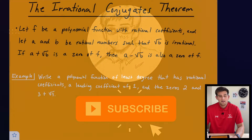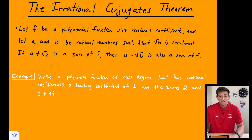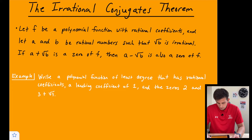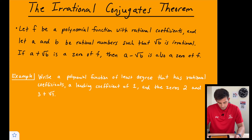In this video I want to talk about a theorem known as the Irrational Conjugates Theorem. It states: let f be a polynomial function with rational coefficients, and let a and b be rational numbers such that the square root of b is irrational. If a plus root b is a zero of f, then a minus root b is also a zero of f.